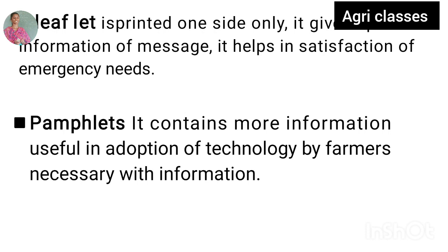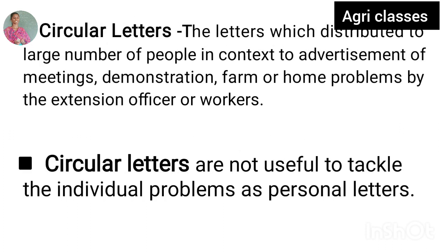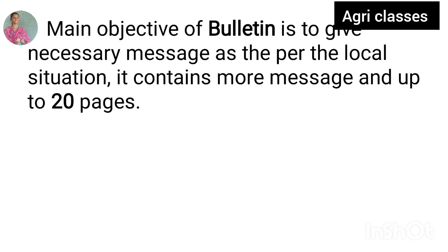A leaflet is printed on one side, contains special information, and is recommended for emergency needs. A pamphlet contains much information on a technology to perform. Circular letters reach a large number of people but are not useful to tackle individual problems — personal letters are used for that. Bulletins contain the main important message relevant to the local situation, and can be up to 20 pages.